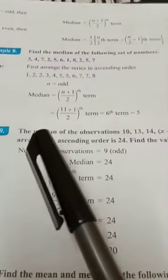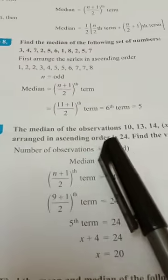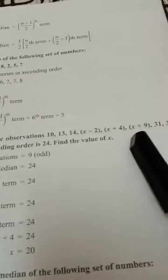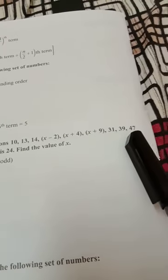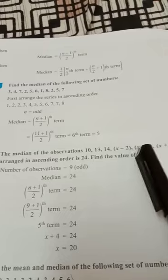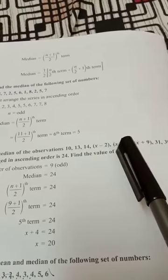Okay, median first. The median of the observations 10, 13, 14, x minus 2, x plus 4, x plus 9, 31, 39, 47 arranged in ascending order.